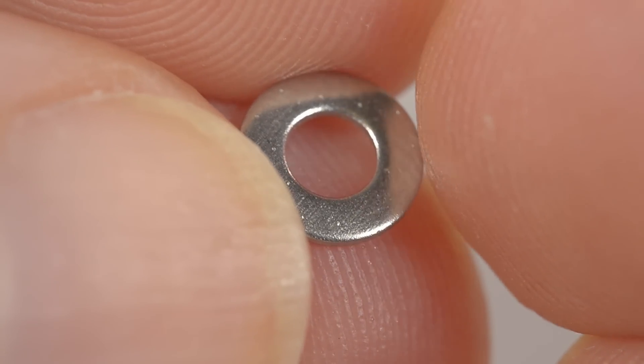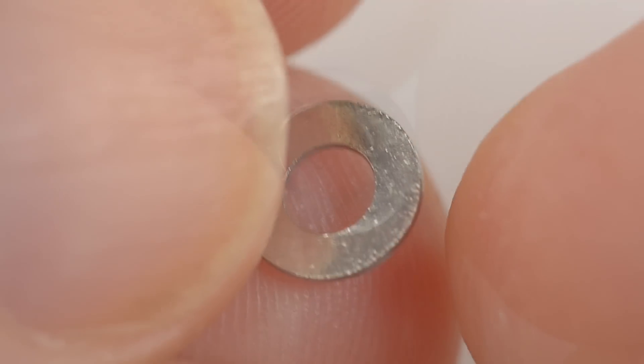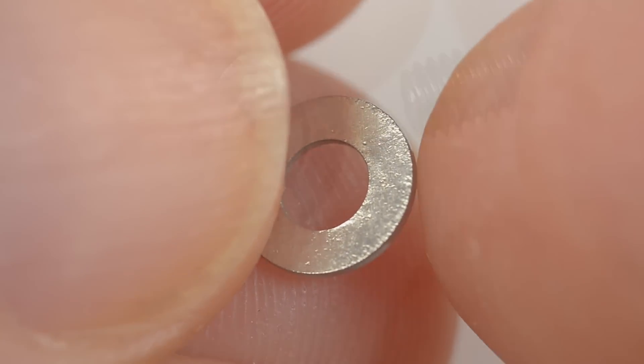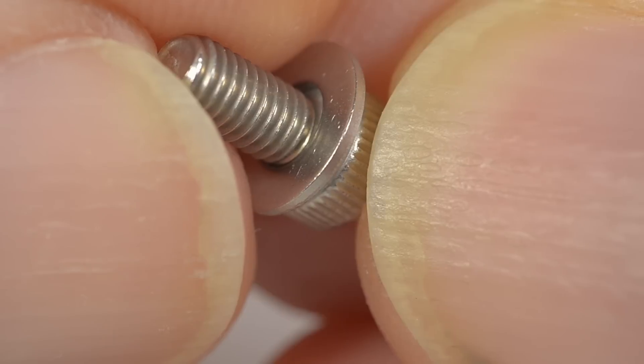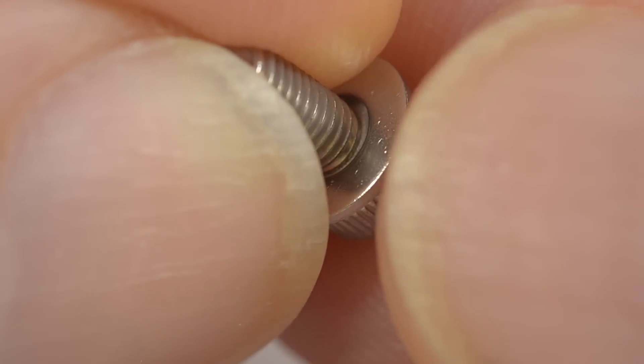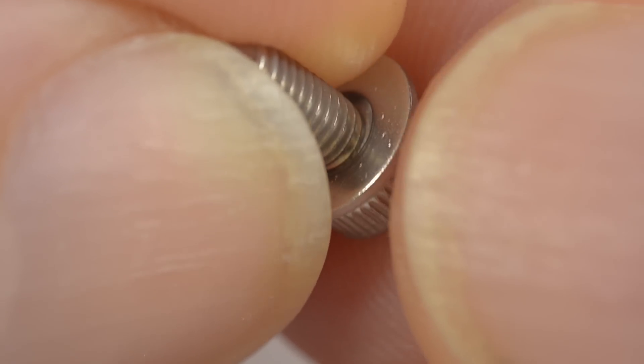The washer has one side with smooth edges and one side with sharp edges. Put the screw through from the side with sharp edges to protect the solder mask by having the smooth edges face the PDB.